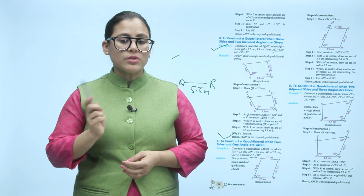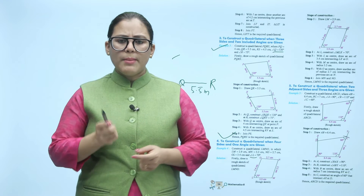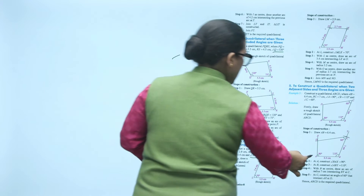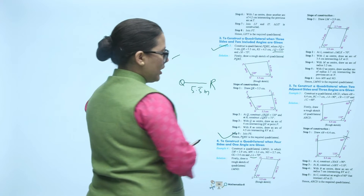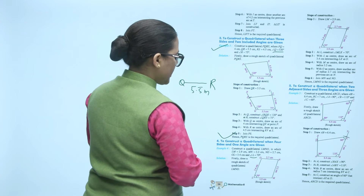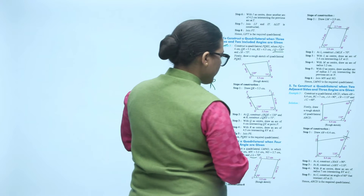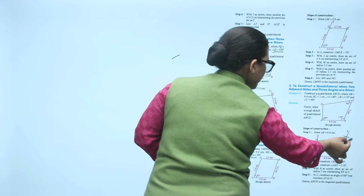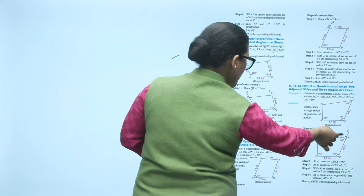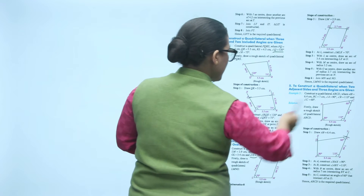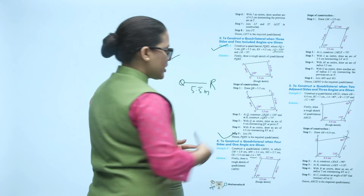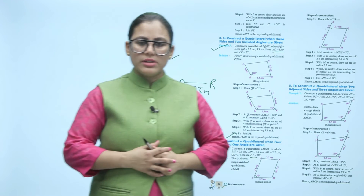Next, construct a quadrilateral when two adjacent sides and three angles are given. Take B as center and put an arc of 7 cm radius, then join the points. Then at C, make a 60 degree angle, make the 60 degree angle like this, and then join. In this way your quadrilateral will be constructed.